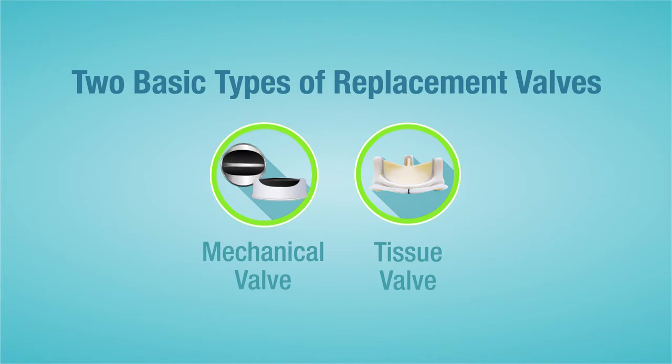A mechanical valve is just that — it's made out of a manufactured substance with mechanically moving parts. The most common type is what we call a bi-leaflet valve. The leaflets will turn to open and close, but there are other styles as well.